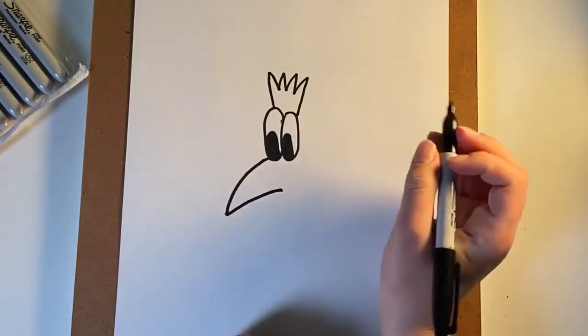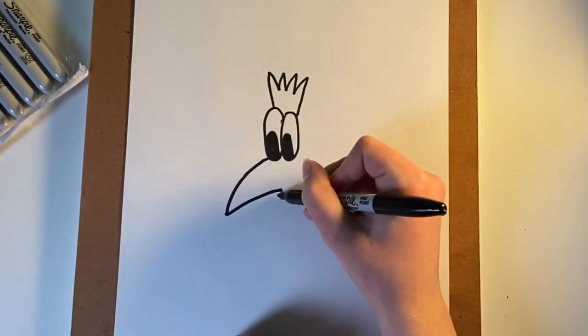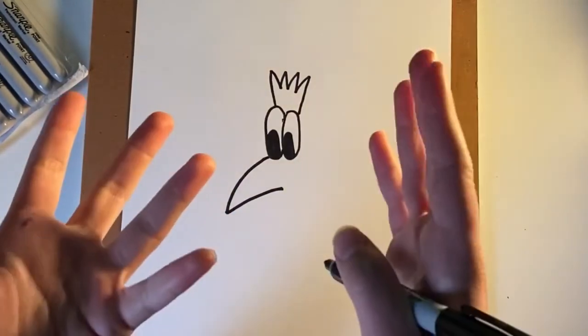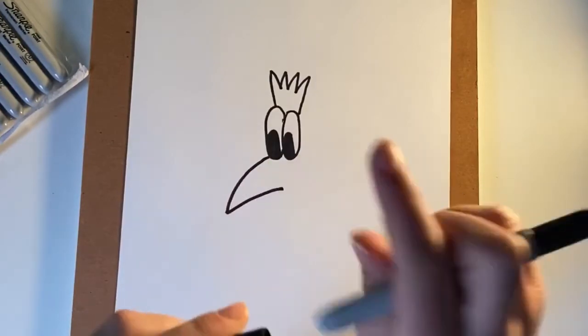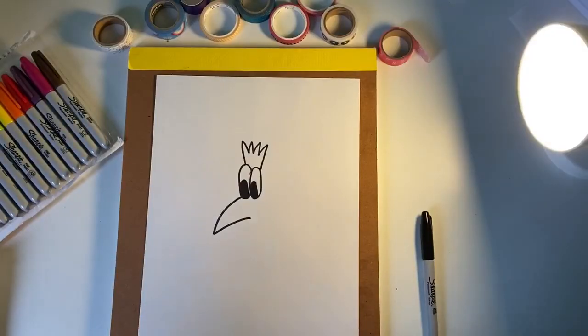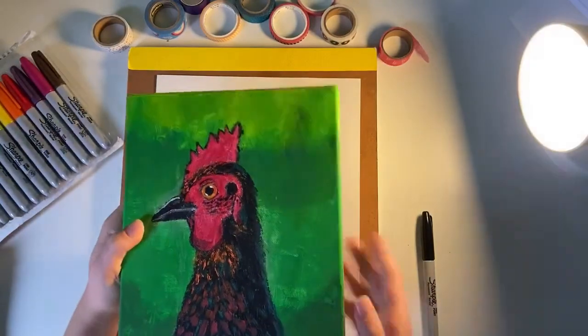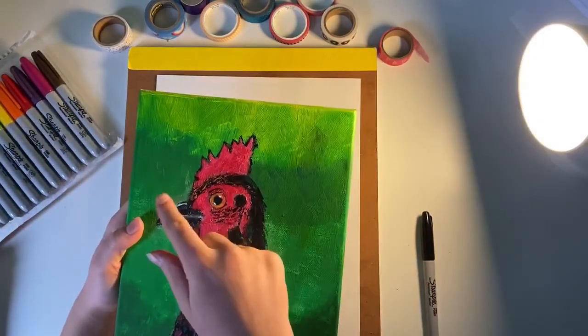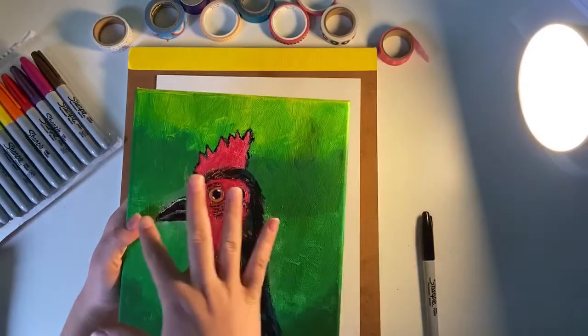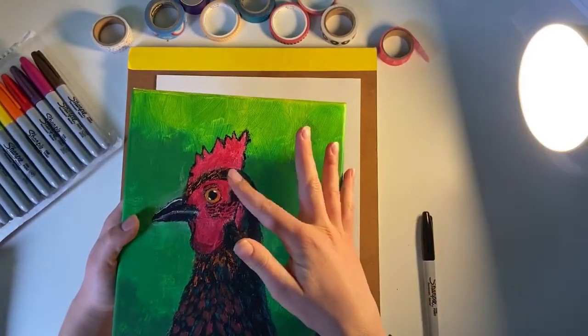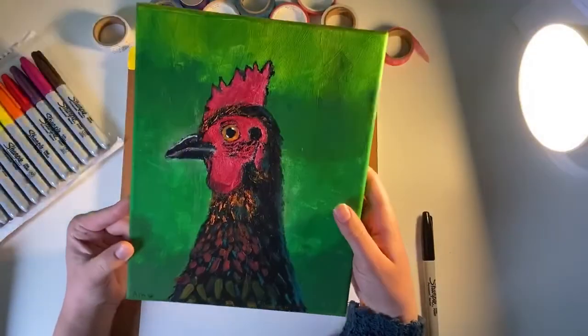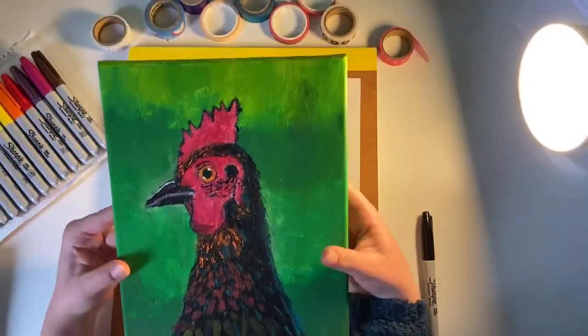And now we're going to draw the waddle, which is for the chicken, the red thing underneath of them. Just to show you an example of what a comb and waddle is before I move on—this is a waddle and this is a comb. That's their beak, that's their ear, and their eye. So yeah, this is actually a painting I did, but let's get back to drawing. So now that we know what a waddle and comb is, we're gonna draw the waddles.